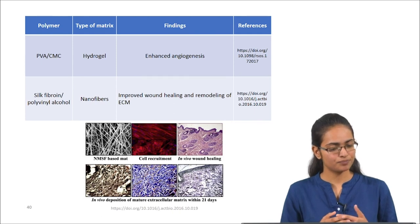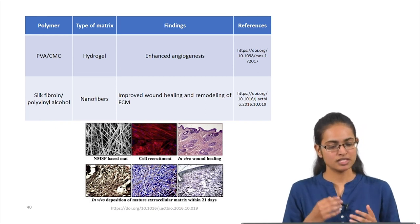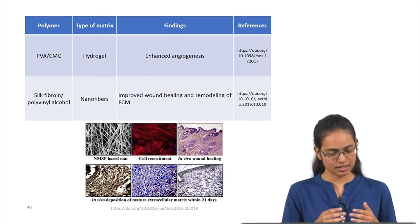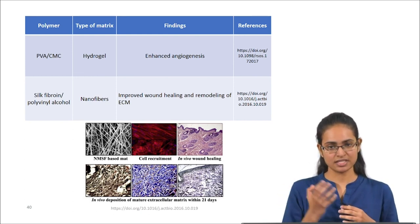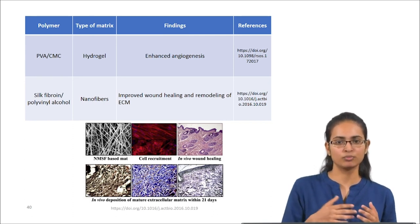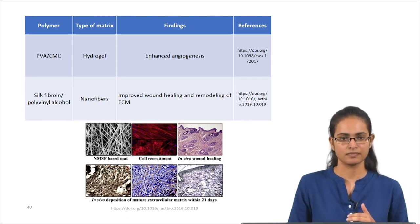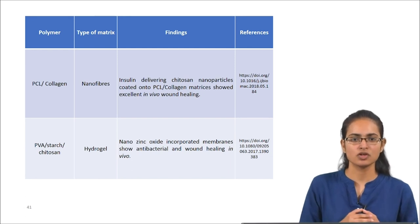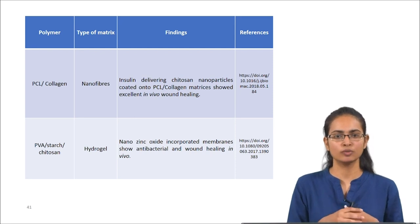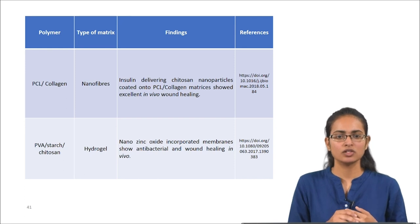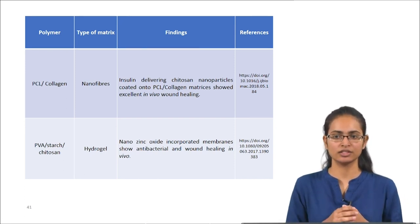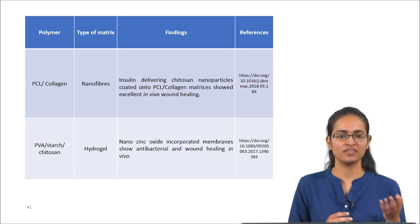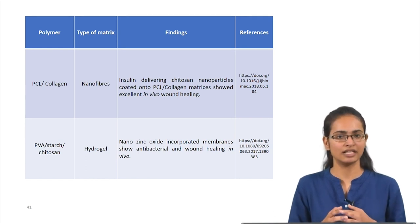Silk fibroin-PVA blend has also been used — silk fibroin is the natural component and PVA the synthetic component — fabricated as nanofibers. The silk fibroin-based mat helps with cell recruitment, and in vivo studies showed improved wound healing and remodeling of the extracellular matrix. PCL-collagen nanofibers loaded with insulin-delivering chitosan nanoparticles showed excellent in vivo wound healing. More than two components can also be blended: PVA-starch-chitosan hydrogel incorporated with nano zinc oxide showed excellent antibacterial activity and wound healing.